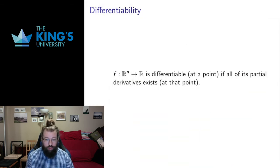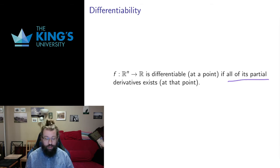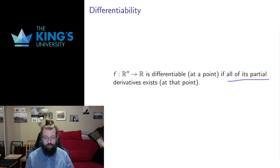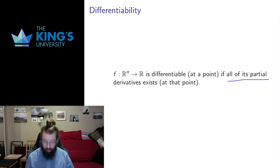The notion of differentiability can be defined via these partial derivatives. A function is said to be differentiable at a point if all of its partial derivatives exist at that point. This is going to be a major theme going forward: we're now going to build ideas about the derivative by putting the partials together into some kind of whole, and there are going to be a bunch of different ways we do that.